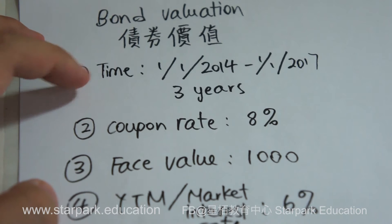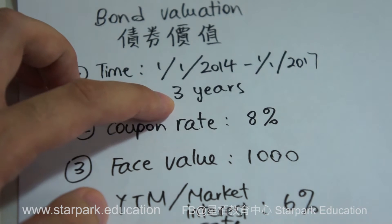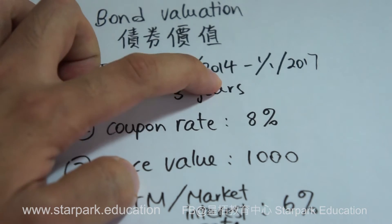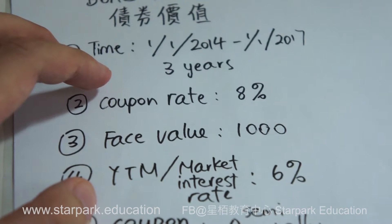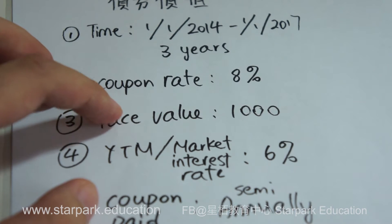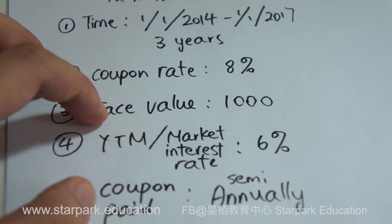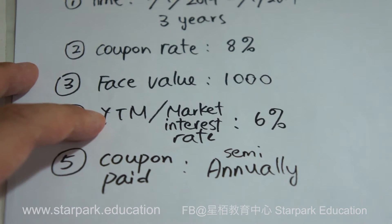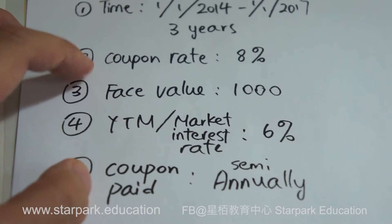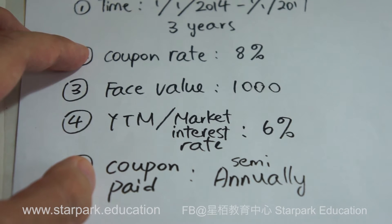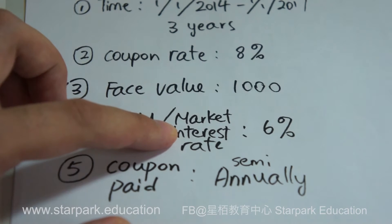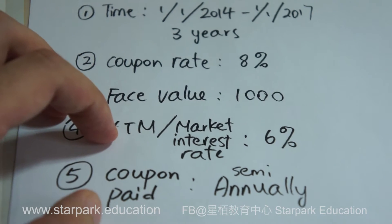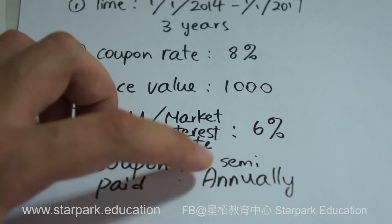For the previous example, I used a 3-year bond starting from 1st of January 2014 to the 1st of January 2017. The coupon rate annually is 8% and the face value is $1,000, so at the end of January 2017, I get back $1,000. YTM, yield to maturity, which means the market interest rate is 6%. Make sure that the coupon rate and the market interest rate are completely different because the coupon rate is only needed to calculate how much coupon I have received during the period. But the market interest rate is used to calculate the bond price.